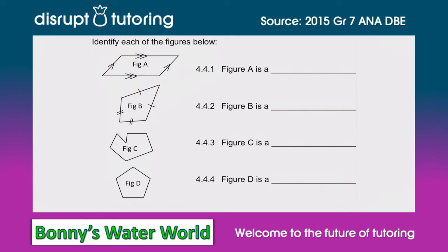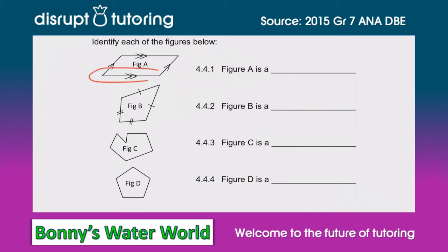Let's start off by looking at figure A. We notice that we've got two pairs of arrows on one pair of line segments, and another pair of different types of arrows on the other line segments. These arrows mean that this line is parallel to this line, and that line is parallel to that line. When we've got two pairs of parallel lines, this type of shape is called a parallelogram.